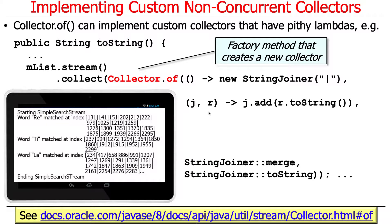We have a list of search results, we convert that list into a stream, and then we immediately collect the stream. This is an example where there are no intermediate operations — it goes directly from a stream of result objects into collecting the stream. All the magic happens in the collector we create using the `Collector.of` factory method. You can see we call `stream.collect(Collector.of(...))` and pass in various lambda expressions or method references to create a custom collector.